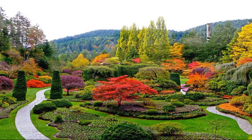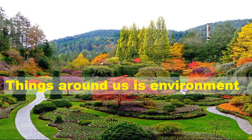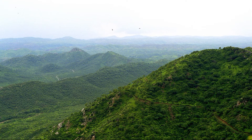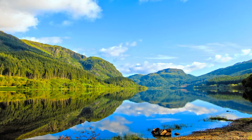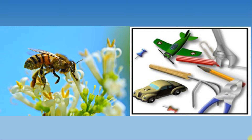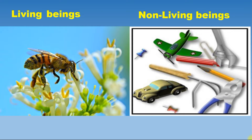The word 'environment' is very familiar to us. We are all a part of the environment, and the things around us like hills, forests, rivers, insects, soil, light, and birds are all part of the environment. Mainly, the environment shows two types of things: living beings and non-living beings. Living beings have life and they show living characteristics.